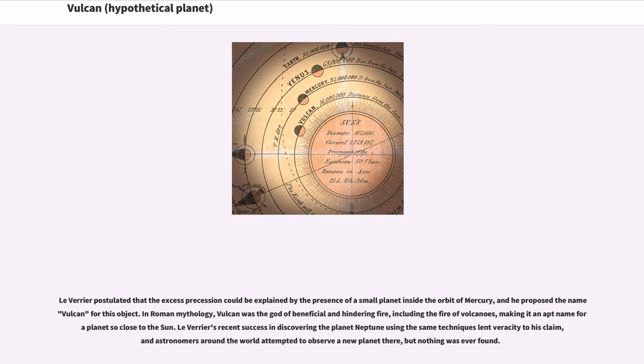Le Verrier postulated that the excess precession could be explained by the presence of a small planet inside the orbit of Mercury, and he proposed the name Vulcan for this object. In Roman mythology, Vulcan was the god of beneficial and hindering fire, including the fire of volcanoes, making it an apt name for a planet so close to the Sun.